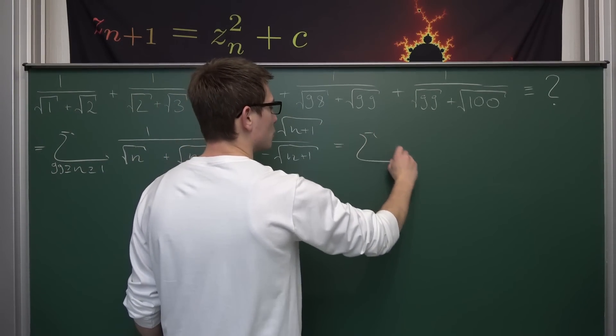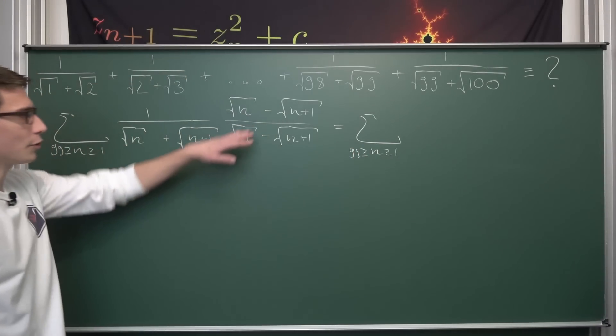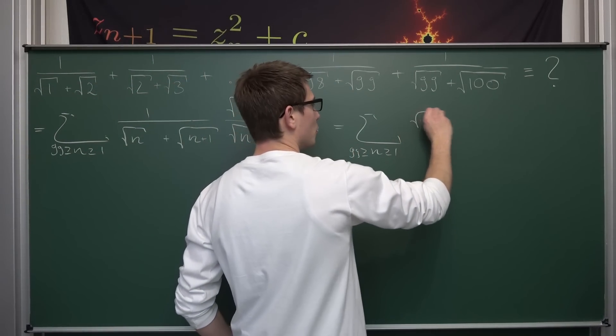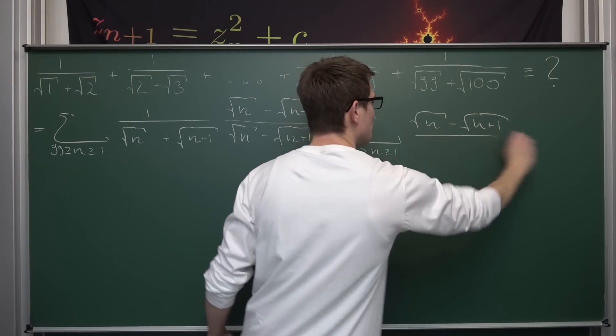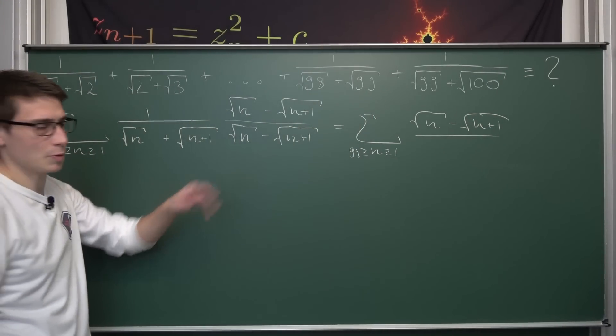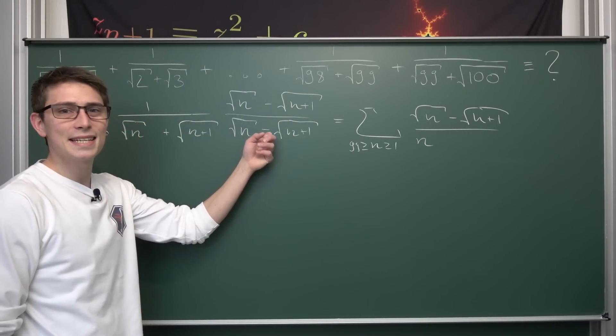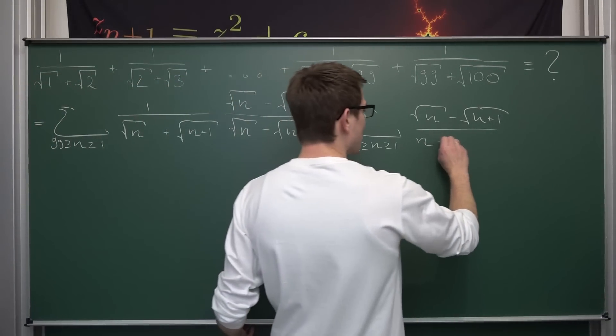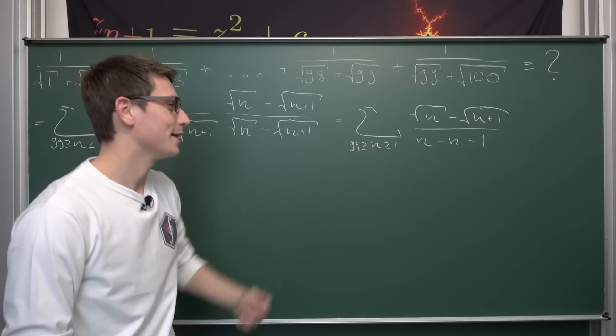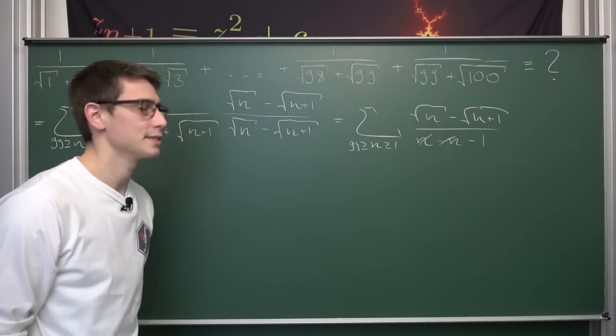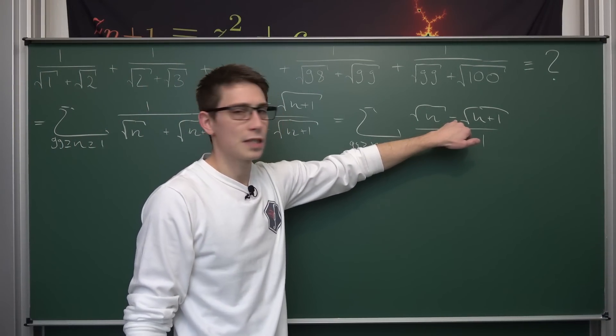Meaning this right here is going to turn into a finite summation where n is bounded between 1 and 99 of, our numerator isn't going to change overall, so square root of n minus the square root of n plus 1 divided by, and just taking the square roots away, it's going to give us n. And then we are going to have minus the other part squared, meaning minus n minus 1. And this is where everything collapses really nicely because n and negative n are going to cancel out since they are additive inverses to each other.